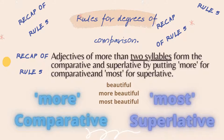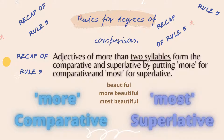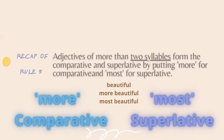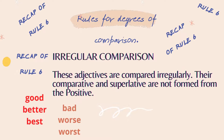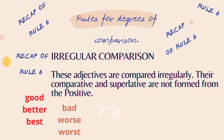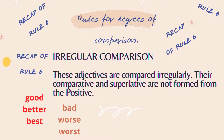Rule number 5 is for words with more than two syllables, like 'beautiful', which produces three sounds. Use 'more beautiful' for the comparative and 'most beautiful' for the superlative. Rule number 6 is for irregular comparison, which takes a completely different form — good, better, best; bad, worse, worst.